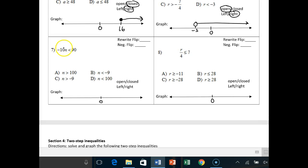Number 7, when we see multiplication, this is negative 10 times some number is less than 90. When we see multiplication, we do the opposite, which is division. So we divide by negative 10. Immediately, because you divide by negative 10, you should say, yes, I should have a negative flip.